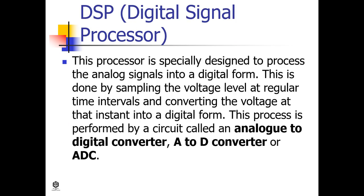The DSP, or digital signal processor, is especially designed to process analog signals into digital form. This is done by sampling the voltage level at regular time intervals and converting the voltage at that instant into a digital form. This process is performed by a circuit called an analog-to-digital converter (A2D converter or ADC).